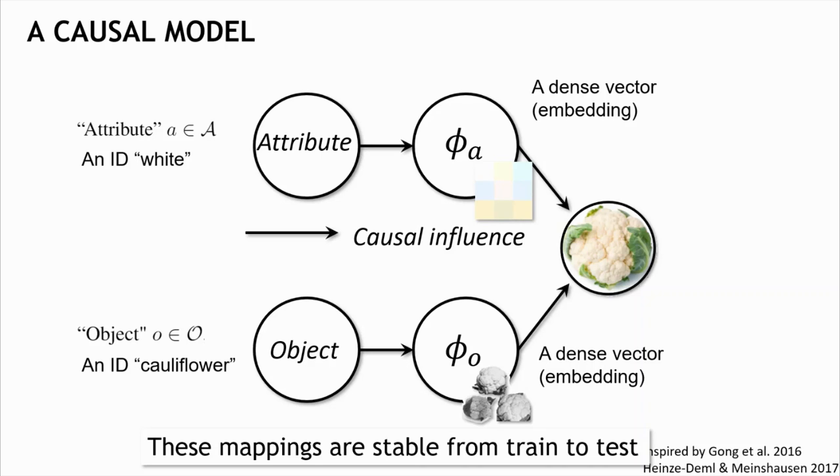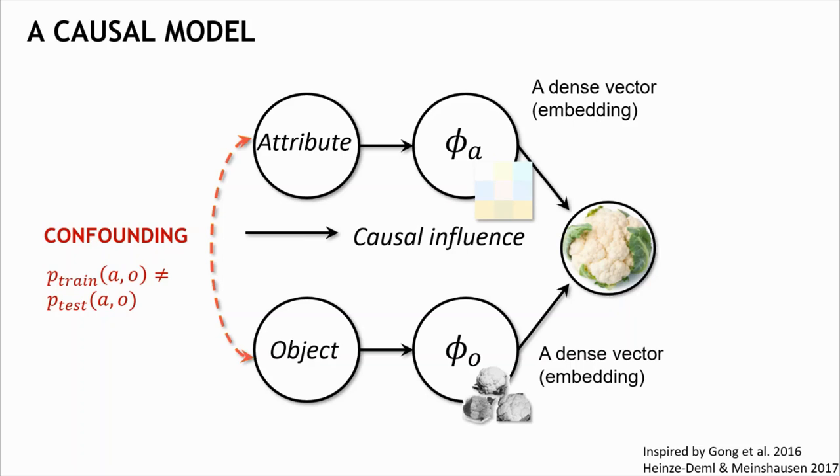But the causal graph has another factor, which is this dashed edge. It expresses the confounding causal mechanism that generates the correlation between the attributes and the objects that exist in the training data, but changes at test time. For example, where all cauliflowers are white and tomatoes are red. In that case, if attributes are correlated, how can we create an image of a new composition, like an image of a purple cauliflower?